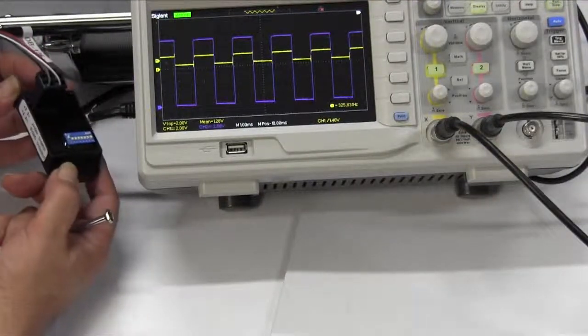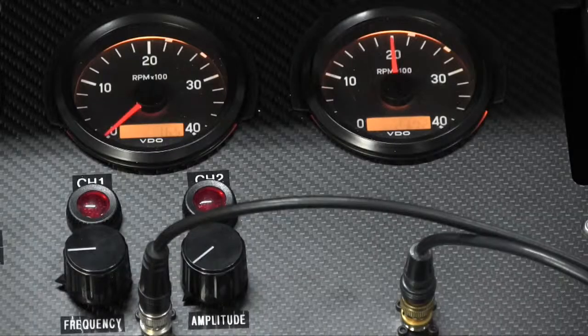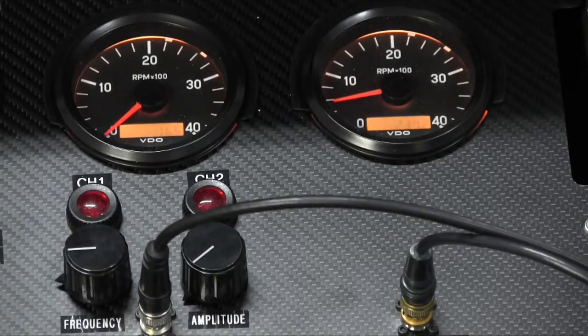I am now going to change the DIP switch so that it divides by 4. You can see the result on the TACO on the right and the purple trace on the oscilloscope.